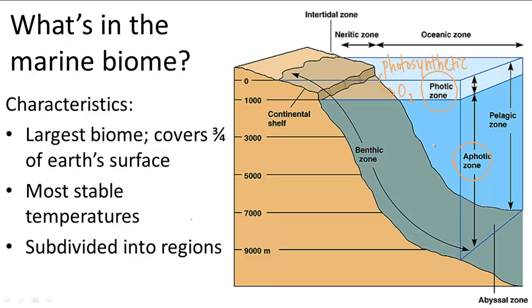The aphotic zone doesn't have a lot of nutrients, so it depends on nutrients from the photic zone sinking down into it — that's how it gets many of its nutrients. The reason it lacks nutrients is because there are no plants in the aphotic zone.